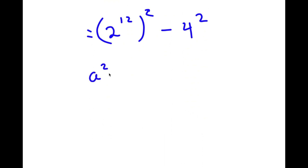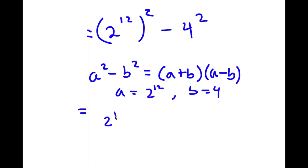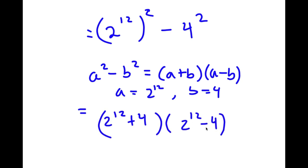Now, using the difference of squares formula — a squared minus b squared equals (a plus b)(a minus b) — where a is 2 to the power of 12 and b is 4, I get (2¹² plus 4)(2¹² minus 4).